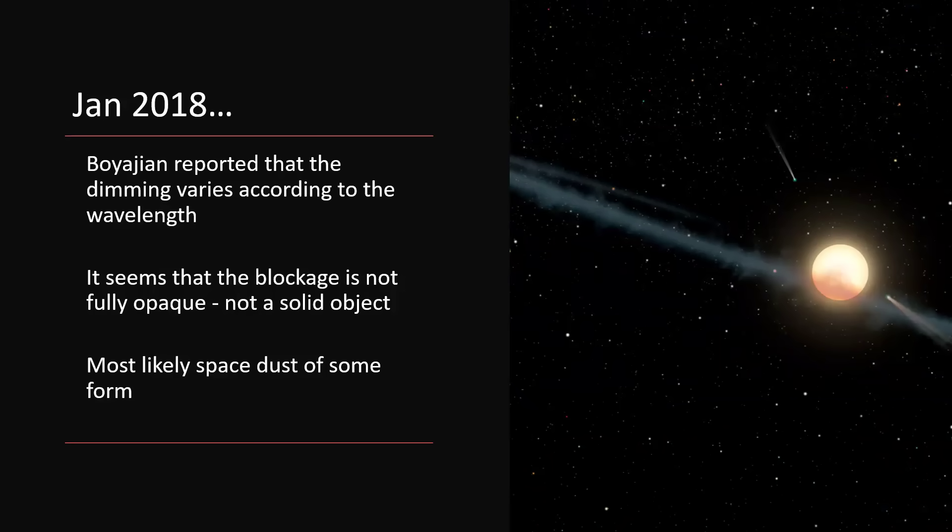But 2018. Boyajian reported that the observations of her star showed dimming that was different depending on which wavelength of light you looked at. So follow-up observations with a spectrometer were able to show that the light from the star was being reduced differently at different wavelengths. So this does not suggest a truly solid object. I suppose it might mean the Dyson sphere's got windows in it that are tinted, or there's all sorts of explanations that you could go back to, but it's most likely down to space dust and there's the dust blocking some wavelengths more strongly than others.